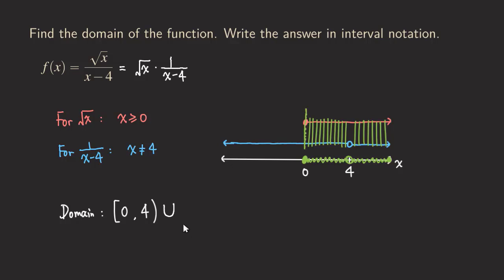We start from four, and because we are not including four we use parentheses. Then we go all the way to positive infinity — there is no stopping point. For infinity, you will always use parentheses because infinity is not a number that you can include. So the complete domain is [0, 4) union (4, positive infinity).